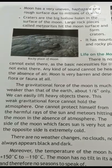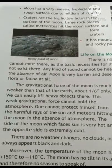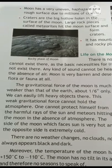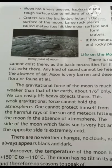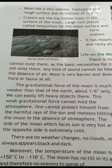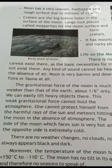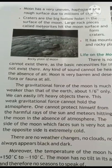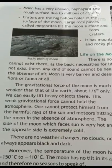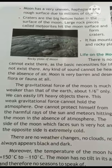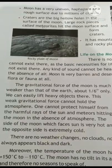The side of the moon which faces the sun is very hot, and the opposite side is extremely cold. This is why the temperature on the moon varies to such extremes.